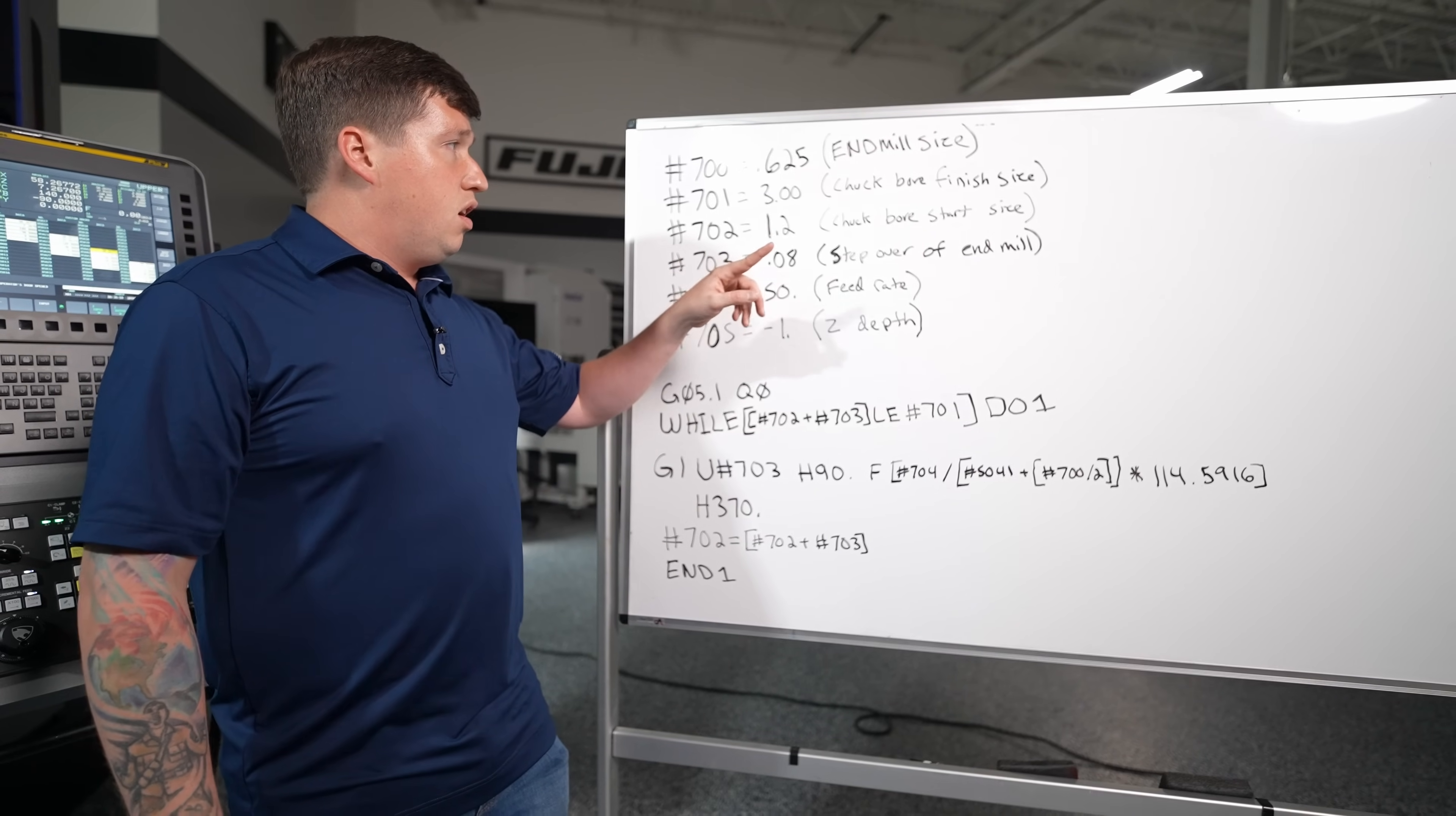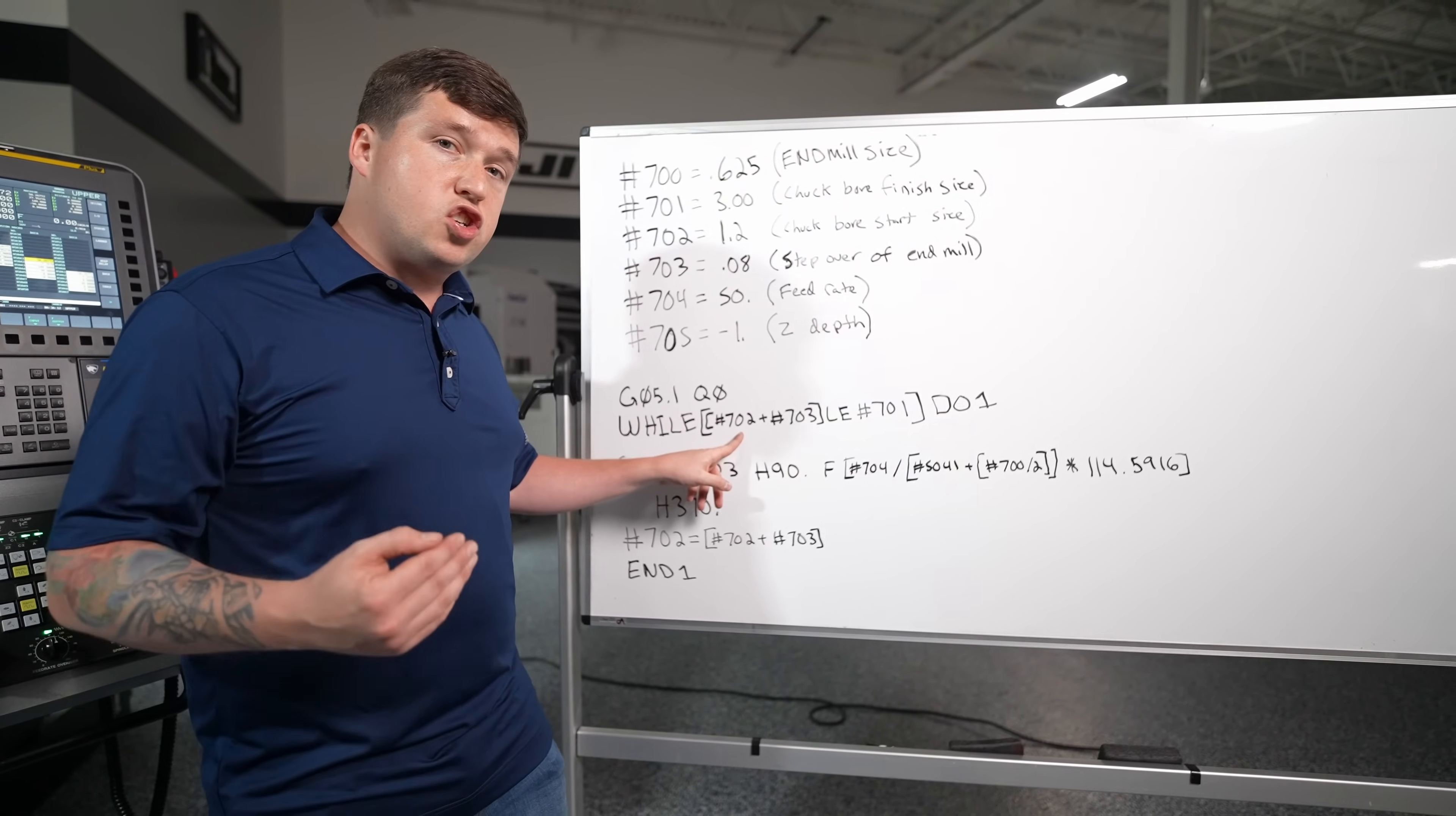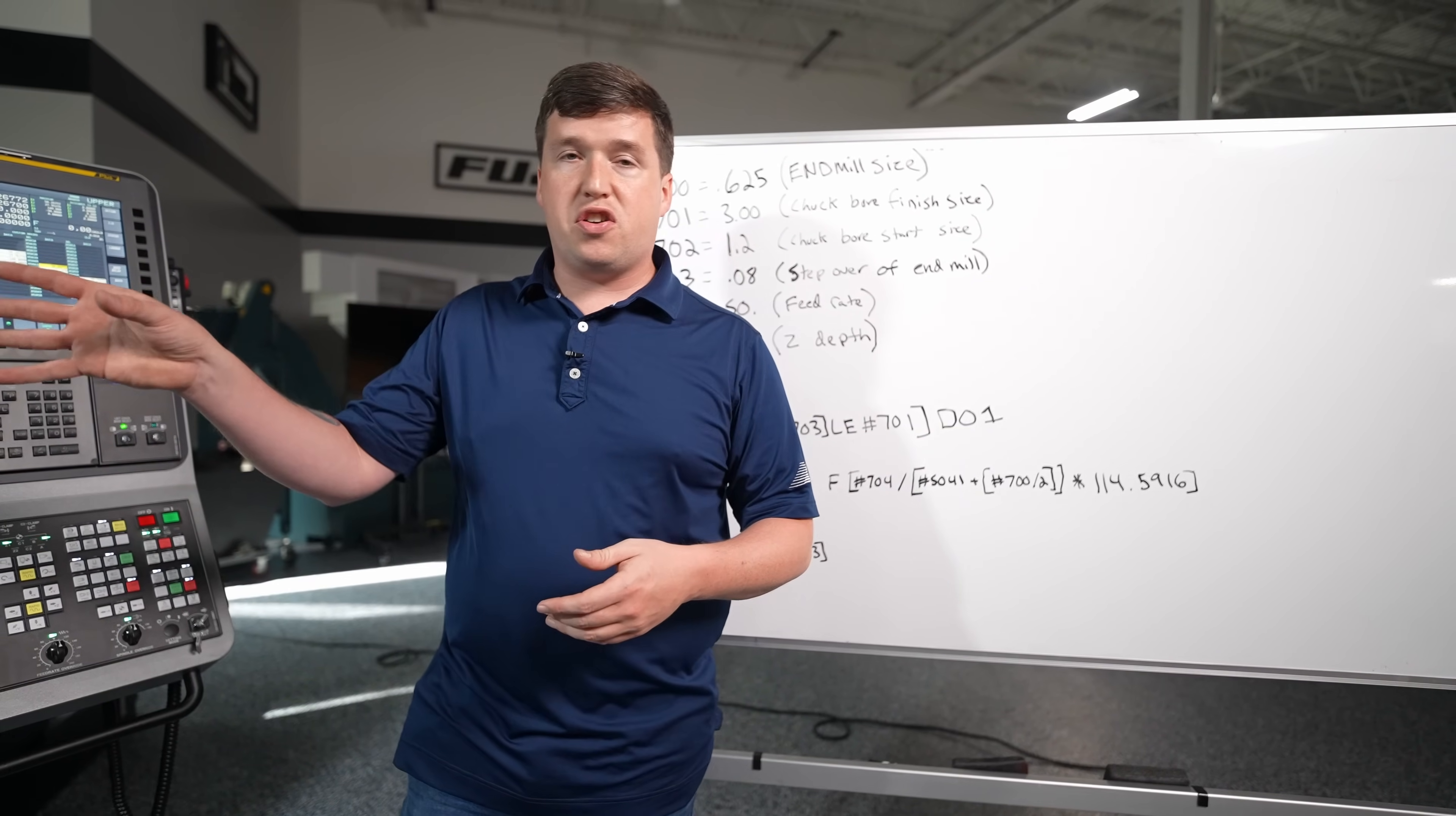So then when it hits end one it's going to go up here. Now 702 has had pound 703 added to it but it's going to check again and say if you add it again is it going to exceed 701. If not run the loop again over and over and over until you get to the point where one more pass is going to be all you need to take to make your jaws to size.